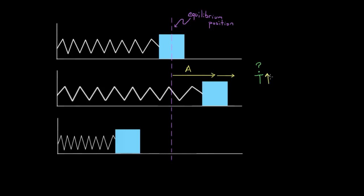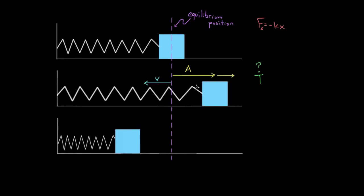But some of you might also say: if we pull this mass farther, Hooke's Law says the force from the spring is proportional to the amount the spring is stretched. So if I pull this mass back farther, there's going to be a larger force. That's going to cause the mass to have a larger speed when it gets to the equilibrium position, so it's moving faster — meaning it might take less time to go through a cycle. It turns out those two effects offset exactly.